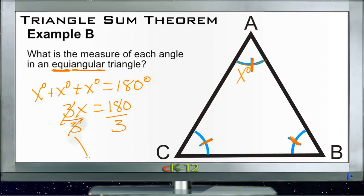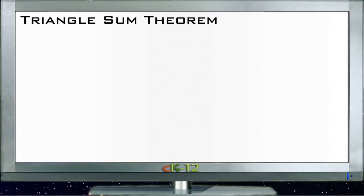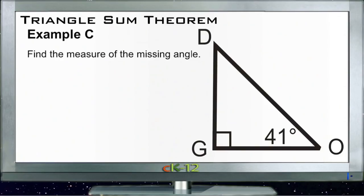And we get x equals 60 degrees. So an equiangular triangle has three angles that are each 60 degrees, a 60-60-60 triangle. And then example C. Example C asks us to find the measure of the missing angle. So this one's kind of similar to the first one, except here we have one angle that's 41 degrees.